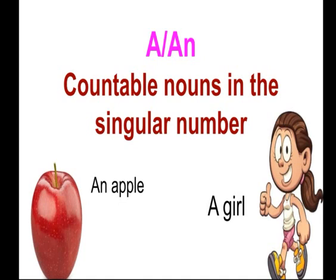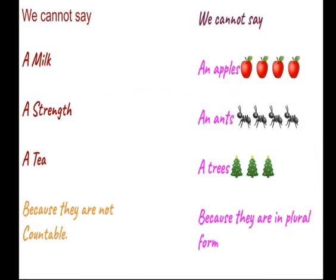We use a or an before countable nouns in the singular number. We cannot say a milk, a strength, a tea because they are not countable. Milk, strength, tea — in sab ko count nai kiya ja sakta. Jin ko hum count nai kar sakte unke pehle hum a ya an nahi lagayenge. We cannot say an apples, an ants, a trees because they are in plural form — plural form ke aage bhi hum a or an nahi laga sakte.